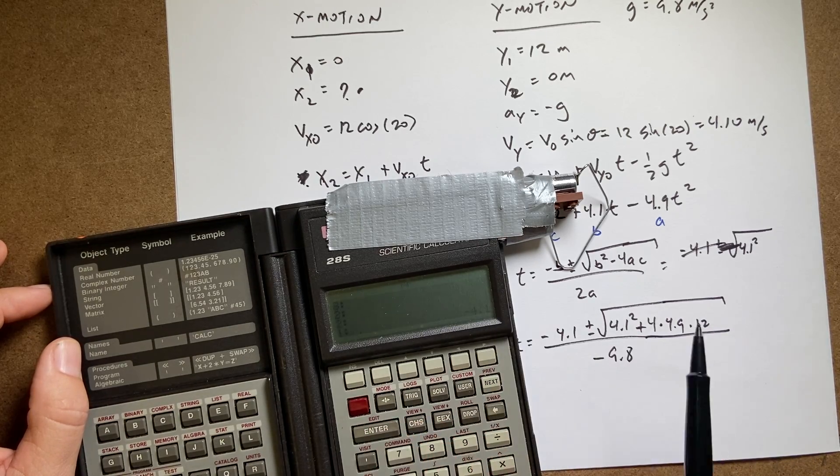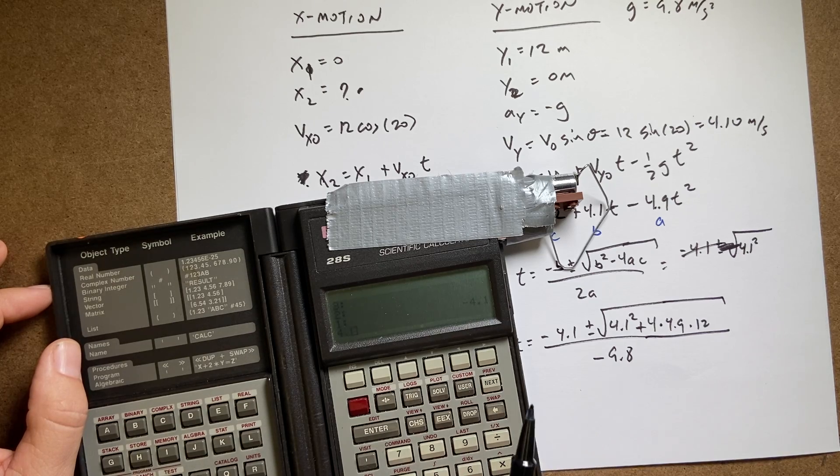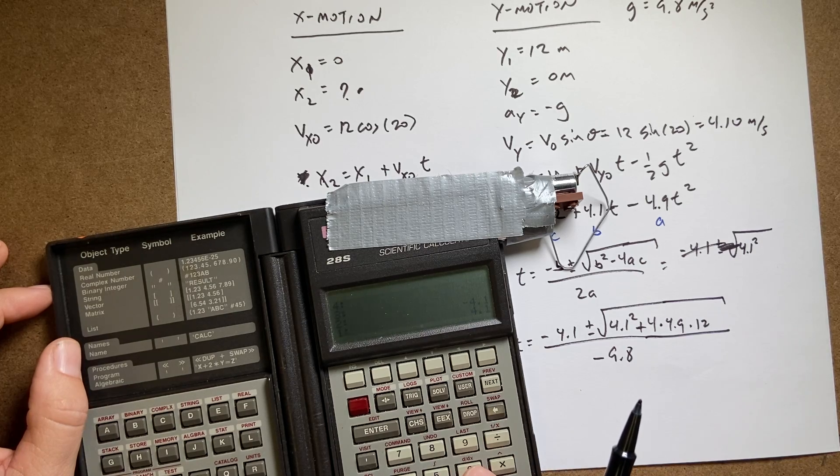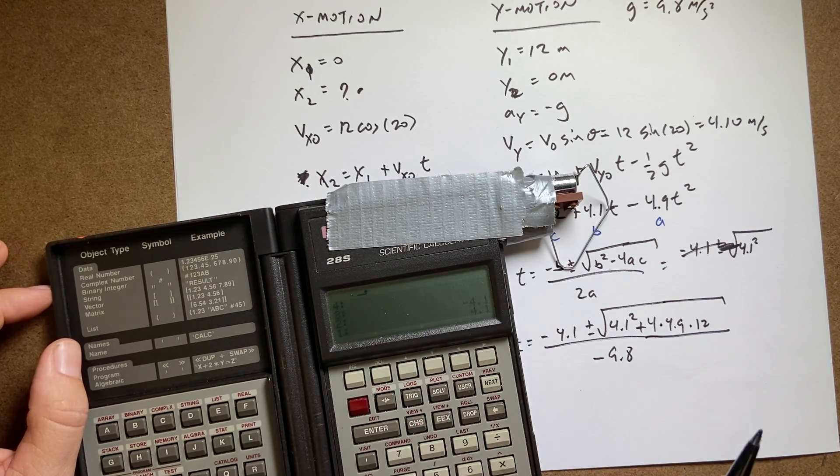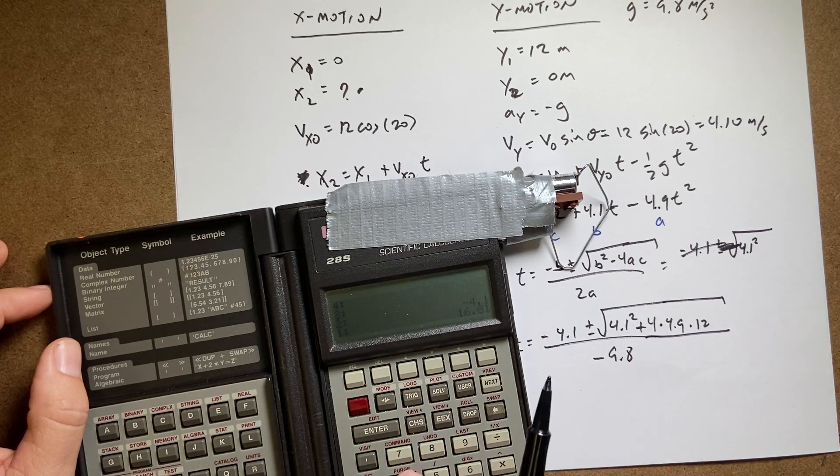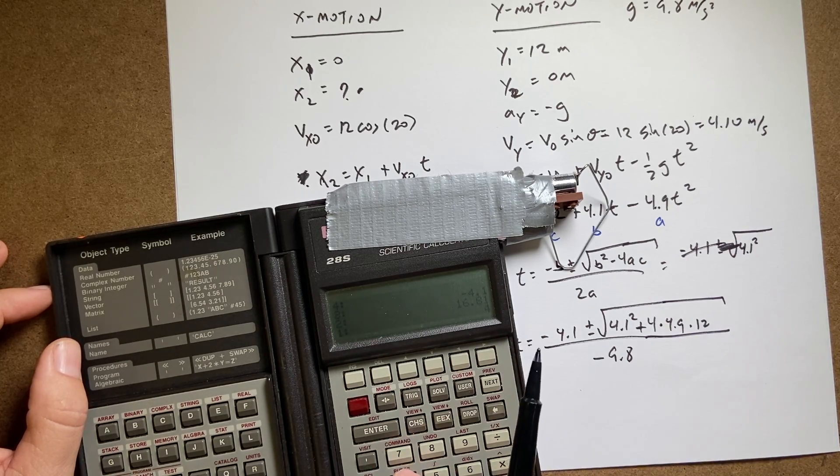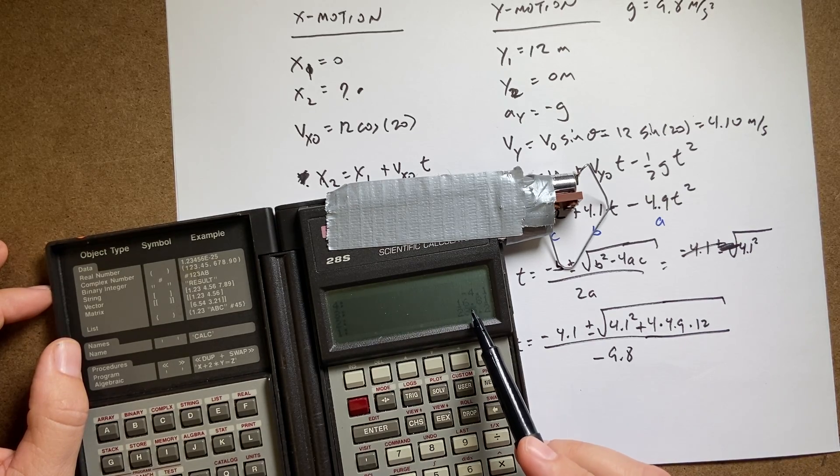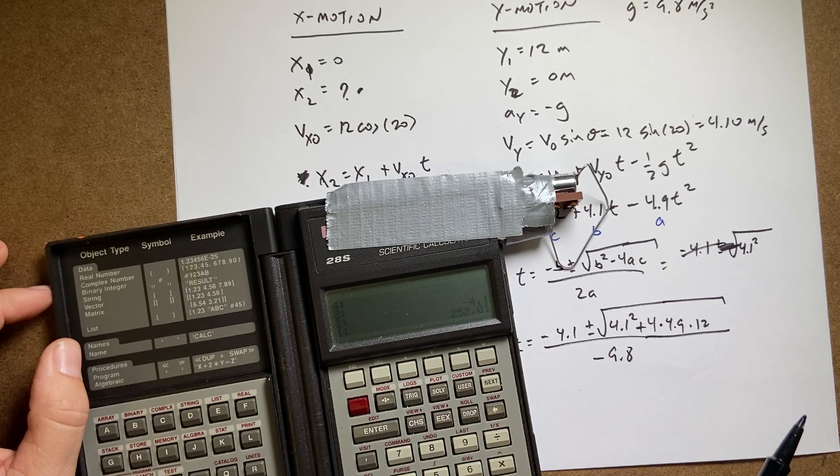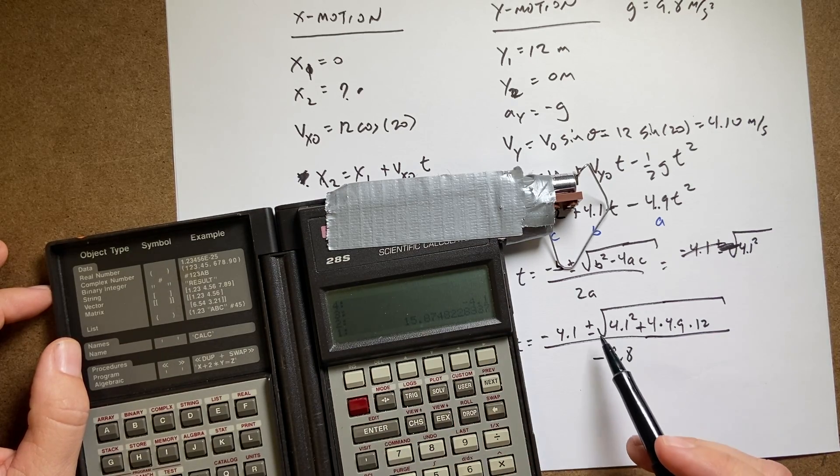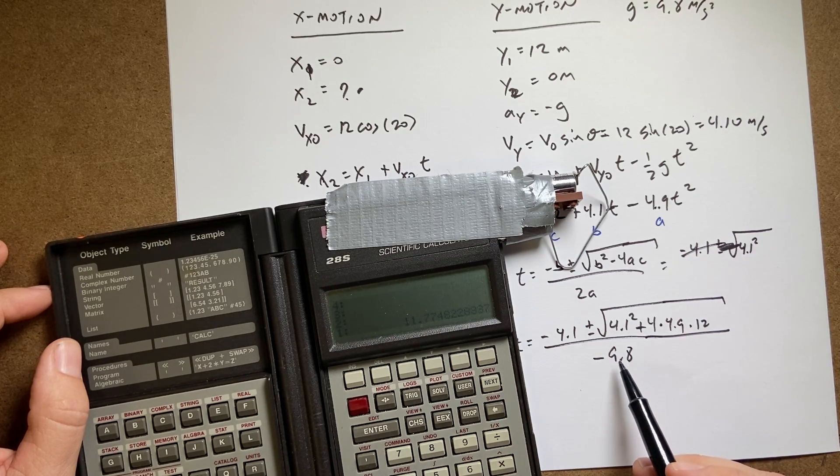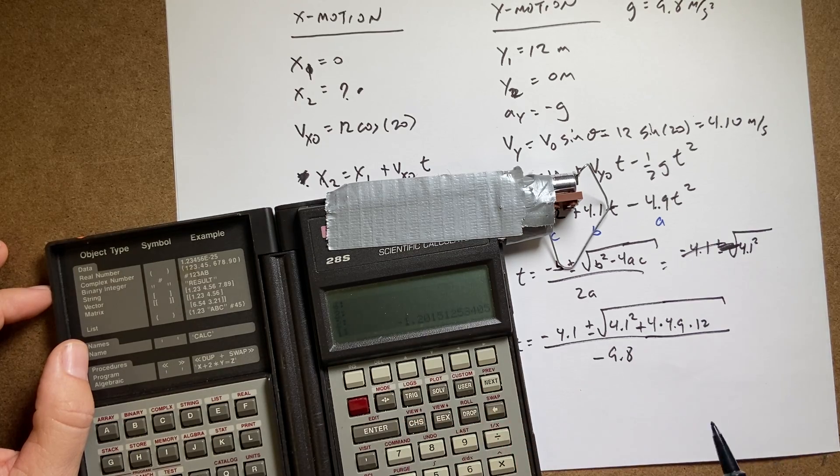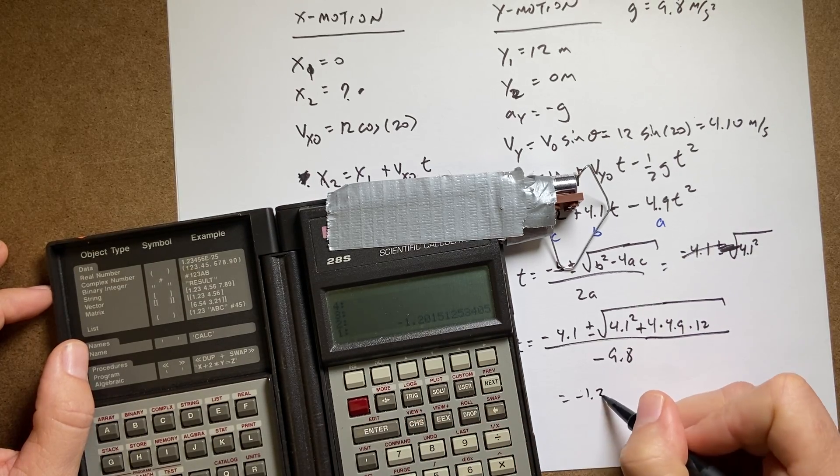Now I need to do this. 4.1 enter squared. I don't normally use calculator. There it is. Squared. Now I need to say 4 enter times 4.9 times 12. And I take all of that and I add it to this, so plus. And I take the square root. And then I add it to this. And then I divide by negative 9.8.